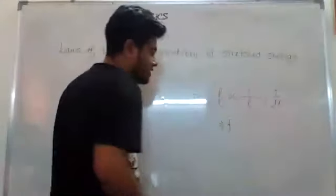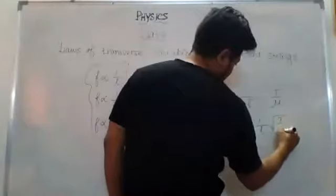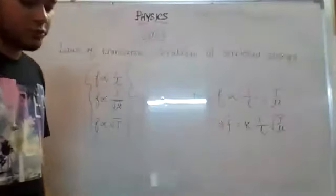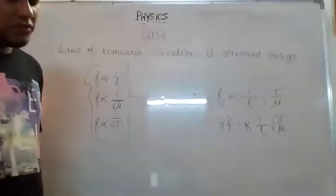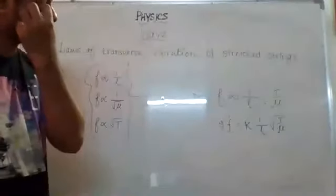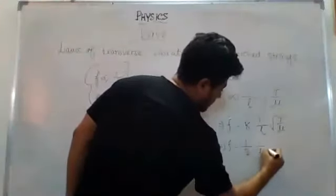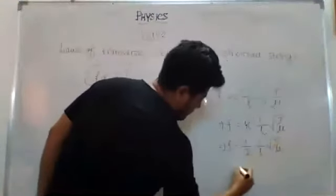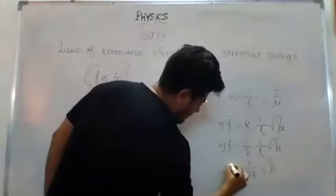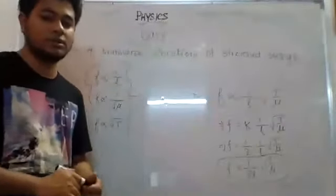Replacing the proportional sign with an equal sign, I introduce a constant K. In the case of the fundamental mode, the value of K has been found experimentally to be one half. So the equation becomes f = (1/2L) × √(T/mu). This is our final equation and we are going to use it to solve several numerical examples.